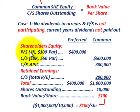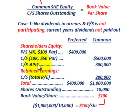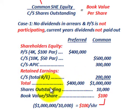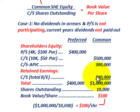Starting with shareholders' equity: for preferred stock, 4,000 shares at $100 par value gives $400,000. For common stock, 10,000 shares at $50 par value gives $500,000. Common stock additional paid-in capital is $300,000. Since preferred stock is non-participating and there are no dividends in arrears and no dividends paid out yet for either stock, the common stock gets the total retained earnings of $200,000. So the common stock total is $500,000 plus $300,000 plus $200,000.